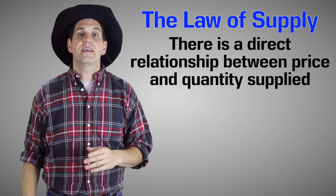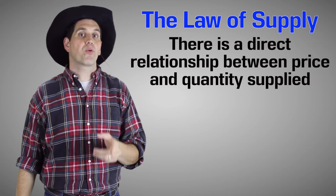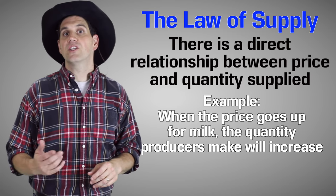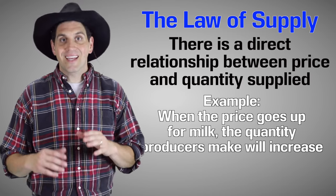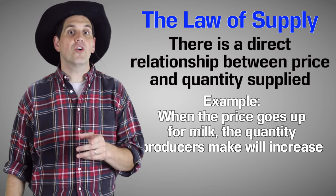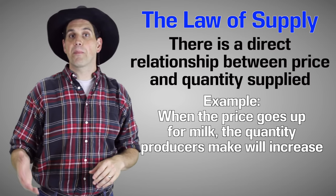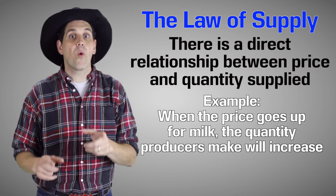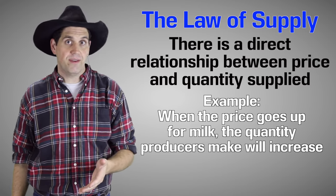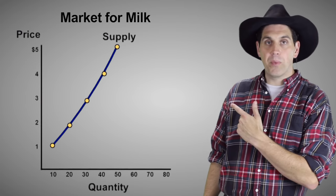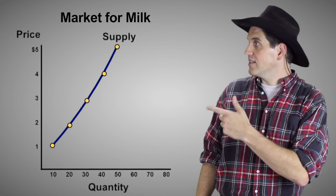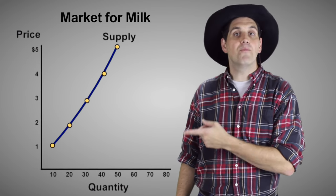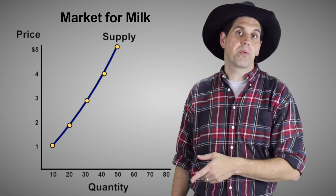The law of supply says there's a direct relationship between price and the quantity supplied. When the price increases for milk, that's going to increase the quantity of milk produced. This is because an increase in the price gives an incentive for dairy farmers to produce more because they want to make more profit. So a supply curve is upward sloping. When the price increases, the quantity supplied increases. And when there's a change in price, that moves along the supply curve.